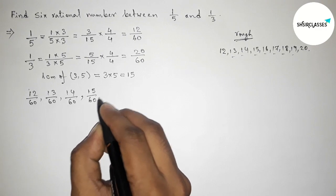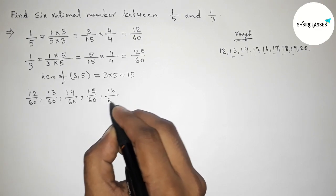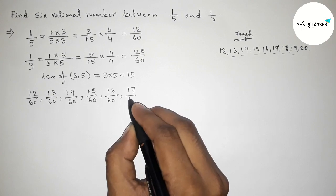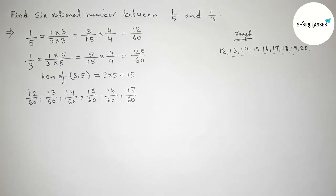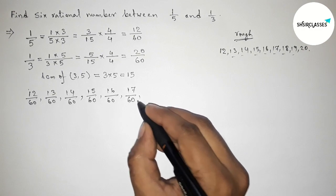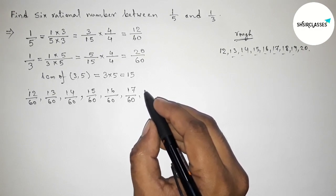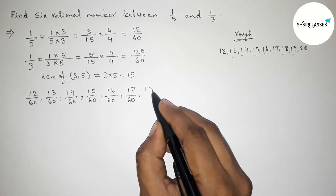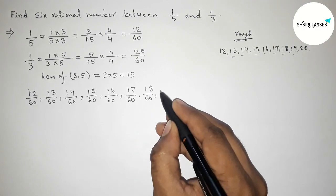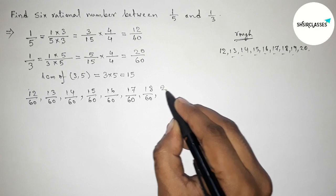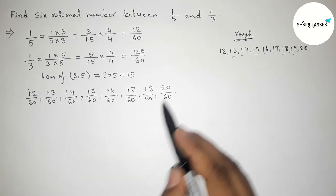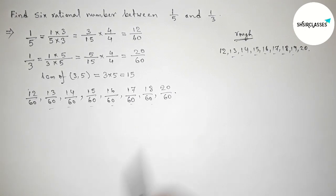So listing them: 12/60, 13/60, 14/60, 15/60, 16/60, 17/60, and 18/60. You can also choose 19/60, but here I am taking 18/60. And the last boundary is 20/60.